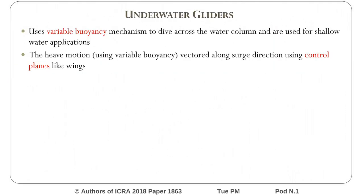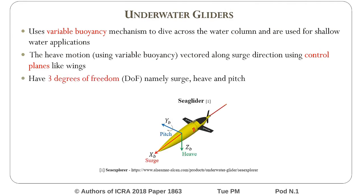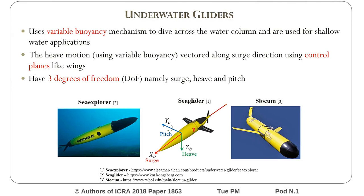Underwater gliders are a division of underwater robots which use a variable buoyancy mechanism to dive across the water column. These gliders have three degrees of freedom, namely surge, heave, and pitch.